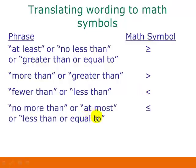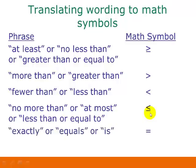'No more than,' 'at most,' or 'less than or equal to' translates into the ≤ sign, which means we are including the value. And 'exactly,' 'equals,' or 'is' translates into an equal sign, meaning we're dealing with one specific value only.